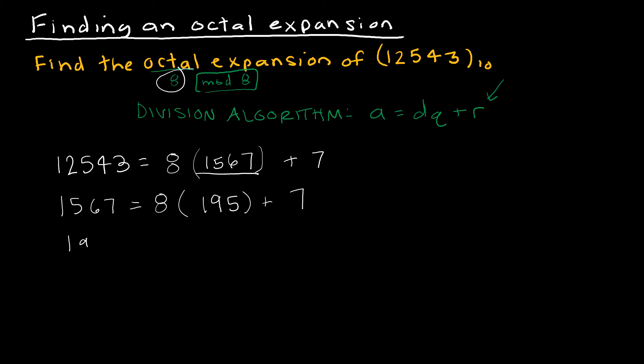Then I'm going to take that quotient again, 195, and say 8 times what? In this case 24, with what remainder? 3. And then I'm going to take the quotient of 24 and say that's 8 times what? Well, 8 times 3 is 24 with a remainder of 0.